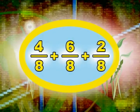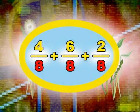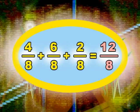And since they now have a common denominator, which is eight, we can now add our fractions. Doing this, we get twelve-eighths.